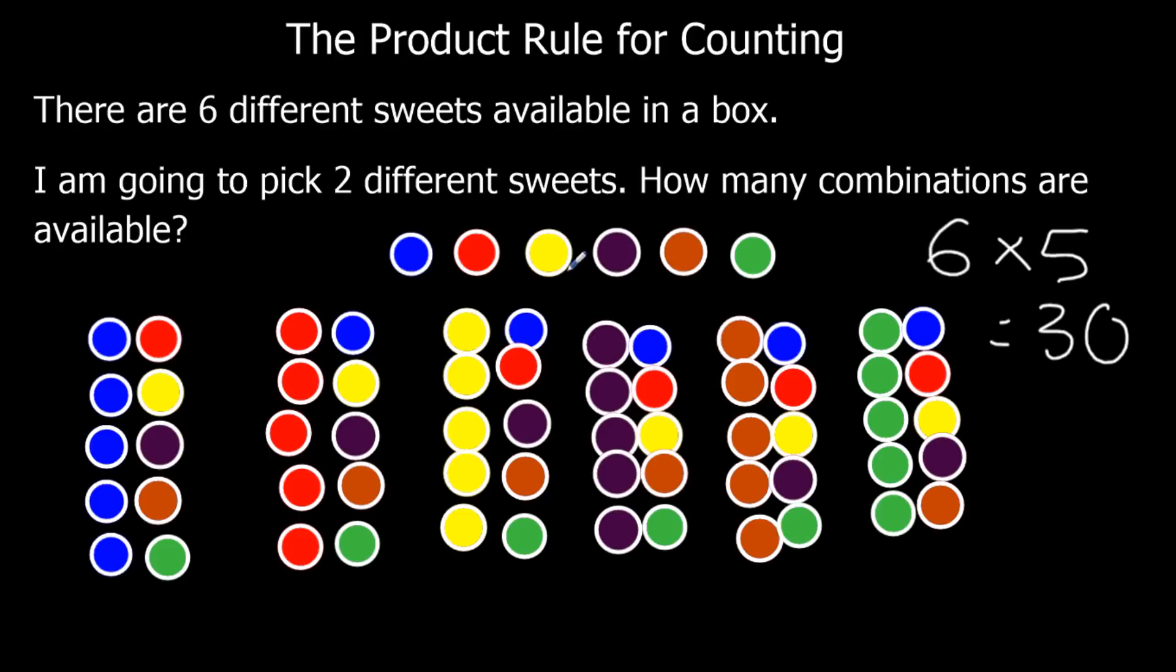And if I want how many combinations can I have, blue, red is the same as red, blue. I've got two sweets and they're the same. So what I need to do is I need to half this number. So there are actually fifteen different combinations.